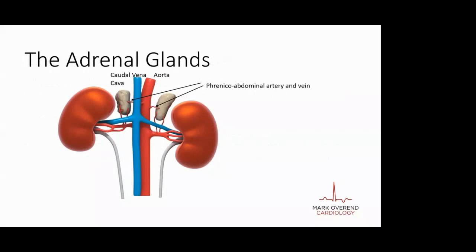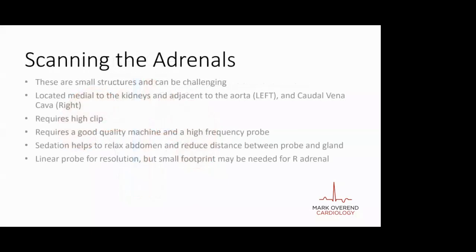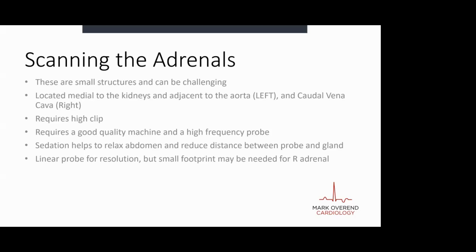The next thing to talk about is the adrenal glands - this is the holy grail point. Scanning the adrenals: these are small structures and can be challenging. In terms of location, the adrenals are medial to the kidneys and adjacent to the aorta on the left. The left adrenal sits next to the aorta, whereas the right adrenal sits next to the caudal vena cava. To get up to these structures requires quite a high clip - if you don't clip high enough you're not going to get your probe easily into the space.